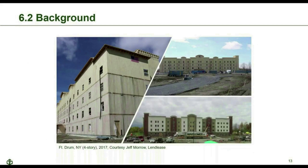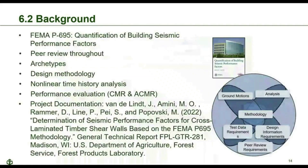Moving to a US example: a four-story CLT building in Fort Drum, New York. Platform-type construction is used where floor panels bear on the wall panels below. Progressing from bottom to upper stories, you can see wall panels, then floor, then wall panels, and so on.